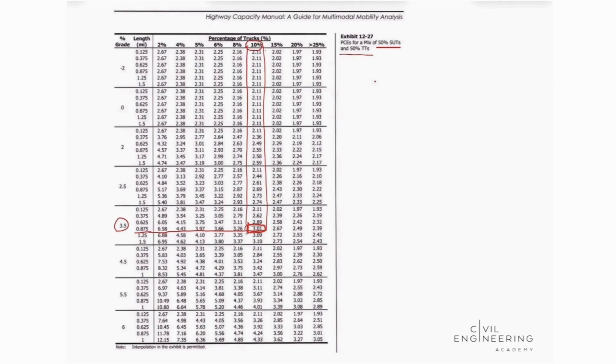Okay. So we find out that our E sub T equals 3.01. And we can go back to the equation and input these values. So we know that our adjustment factor for heavy vehicles is equal to 1 divided by 1 plus P sub T multiplied by E sub T minus 1.